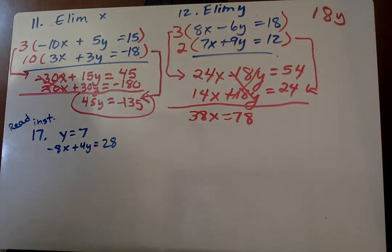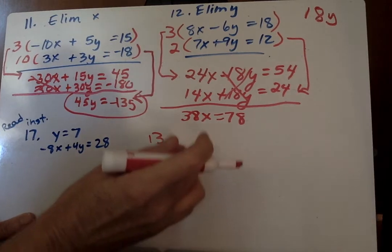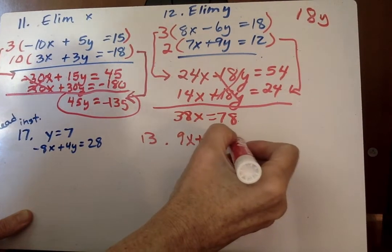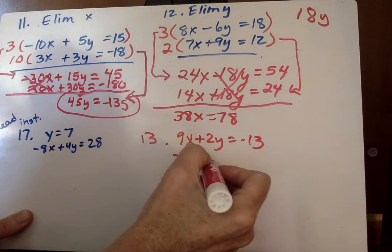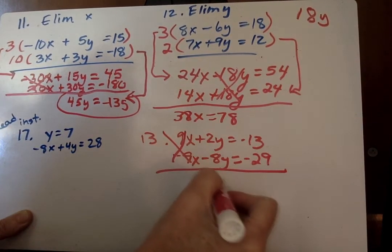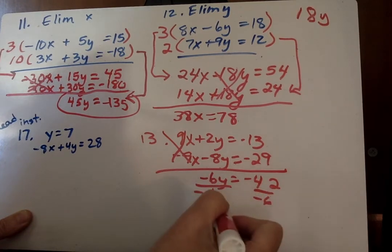Number 17. This is going to be on page 199. Now, once you've created a zero pair, you use the addition property of equality to add the equations. This will eliminate one of the variables, and you solve for the remaining variable. So if I have 9x plus 2y equals negative 13, and then I have negative 9x minus 8y equals negative 29. Basically, you're going to add these together, and I get negative 6y equals negative 42, and y equals 7.